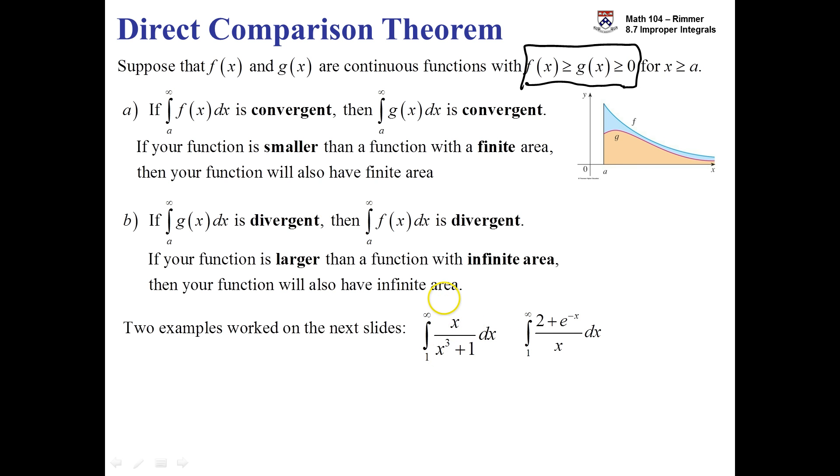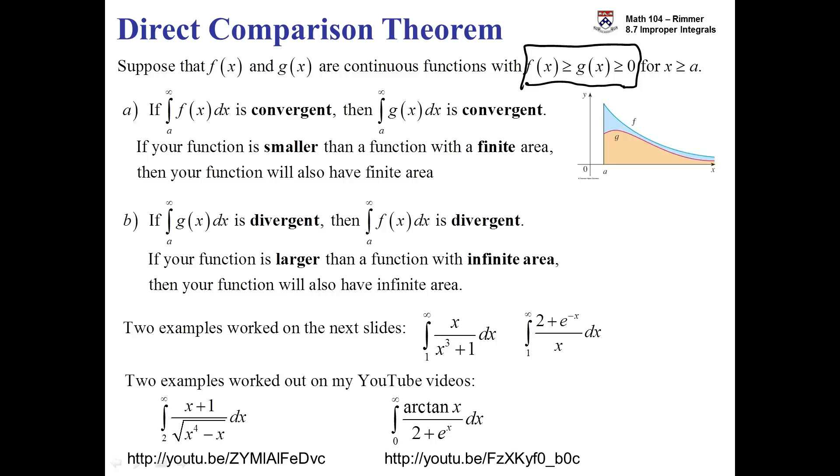x over x cubed plus 1 from 1 to infinity, and 2 plus e to the minus x over x from 1 to infinity. After we've done this, if you want to see more, then I have two more on my YouTube videos. I have x plus 1 over the root of x fourth minus x from 2 to infinity. There's a YouTube link. And then arc tan of x all over 2 plus e to the x from 0 to infinity. And there's the YouTube link for that.